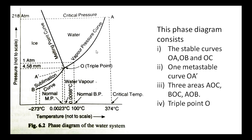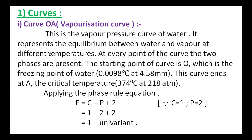The OA curve is the vaporization curve, also called the vapor pressure curve of water. The OB curve is the sublimation curve. The OC curve is the melting point curve. The OA curve represents the equilibrium between water and vapor at different temperatures.